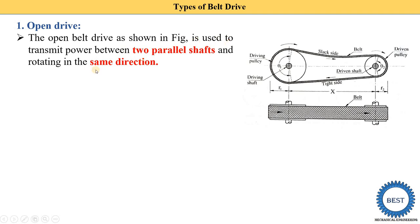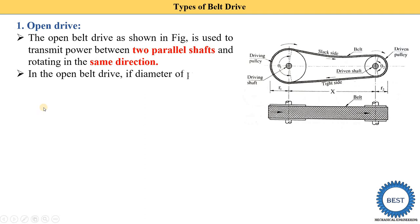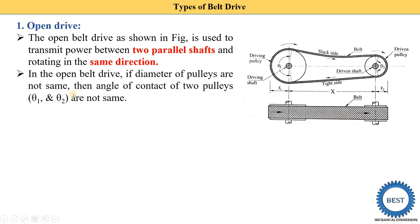Open belt drive is used to transmit power between two parallel shafts rotating in the same direction. The driving shaft and driven shaft are parallel to each other and both pulleys rotate in the same direction — if the driving pulley rotates clockwise, the driven pulley also rotates clockwise; if anticlockwise, the driven pulley also rotates anticlockwise. In an open belt drive, if the diameters of pulleys are not the same, the angle of contact of the two pulleys is not the same.